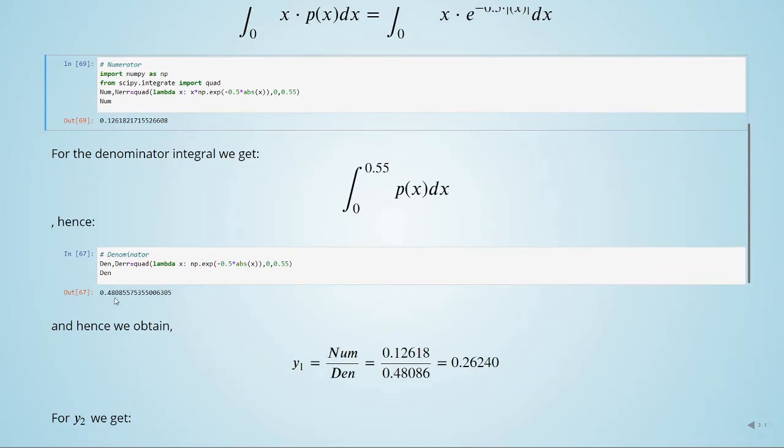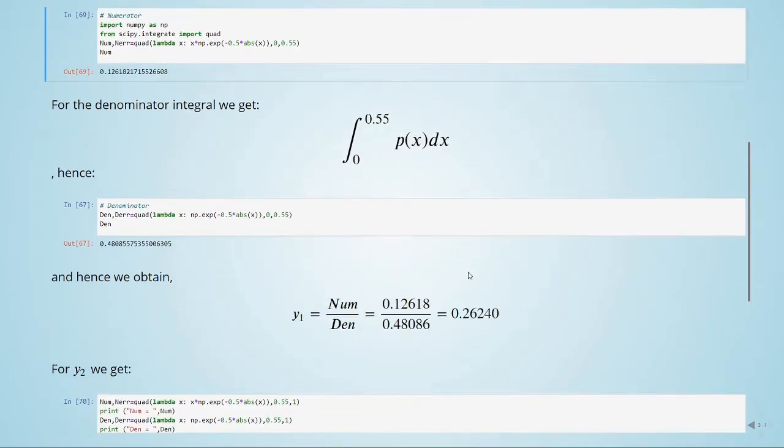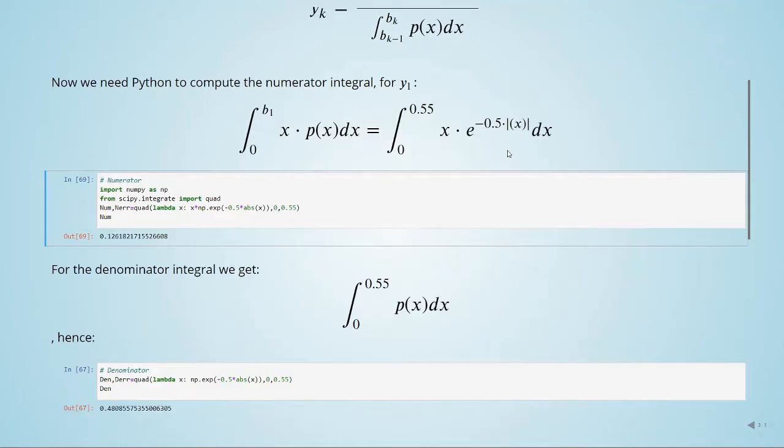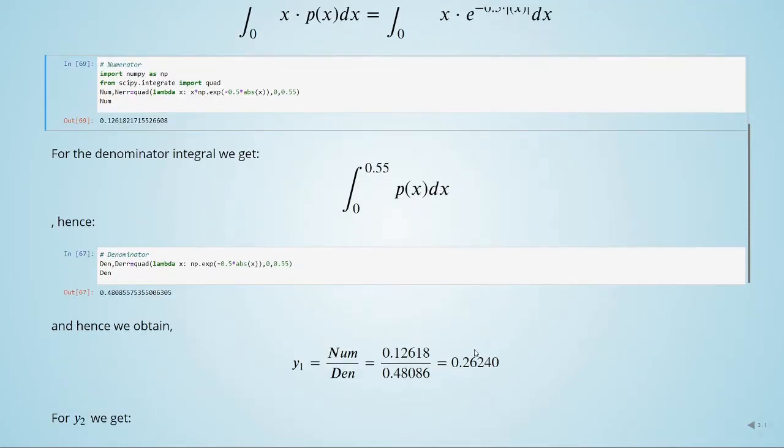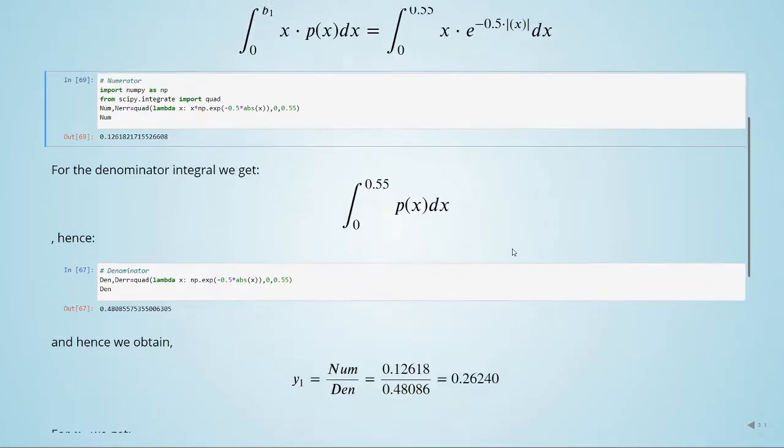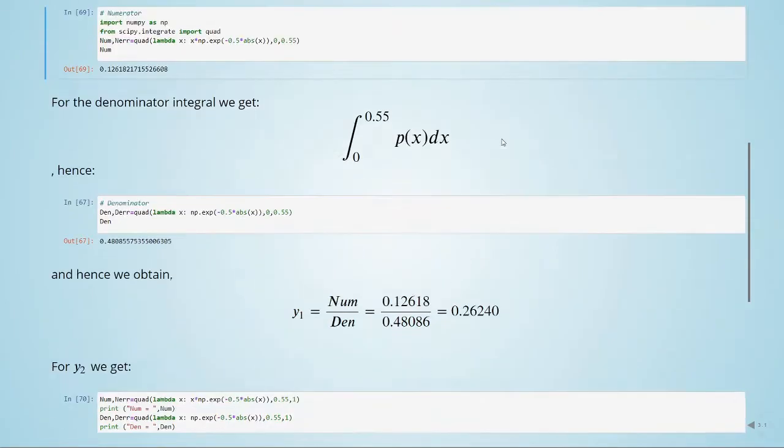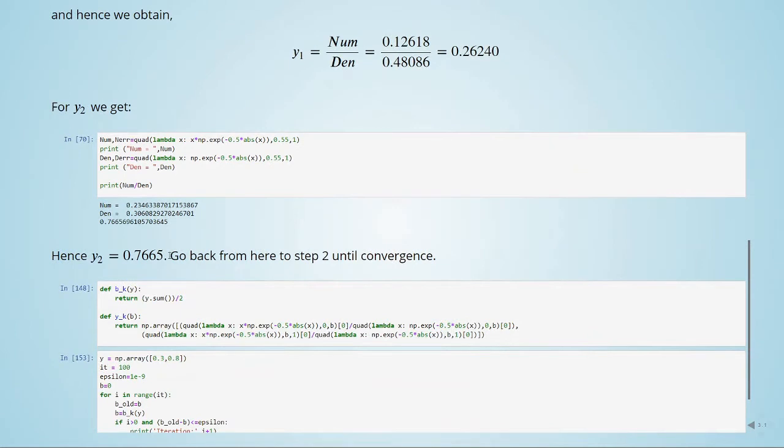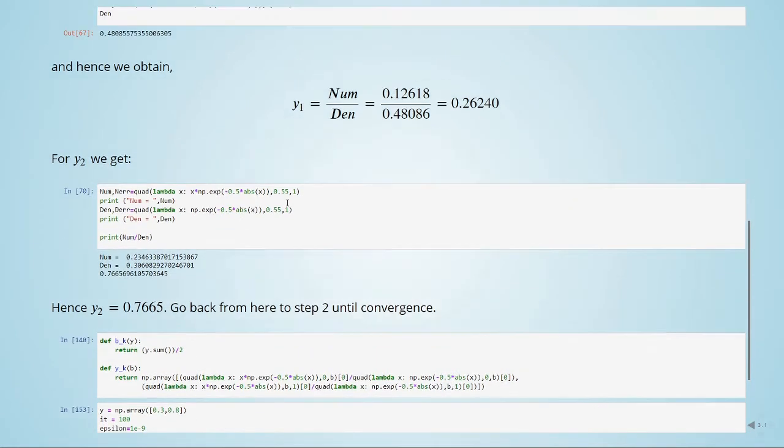And when we do this, we have 0.48. And then the numerator divided by the denominator, and we have 0.26. So this was y1. Here's y2, and then we go back to step 2 until convergence, so as we did before.